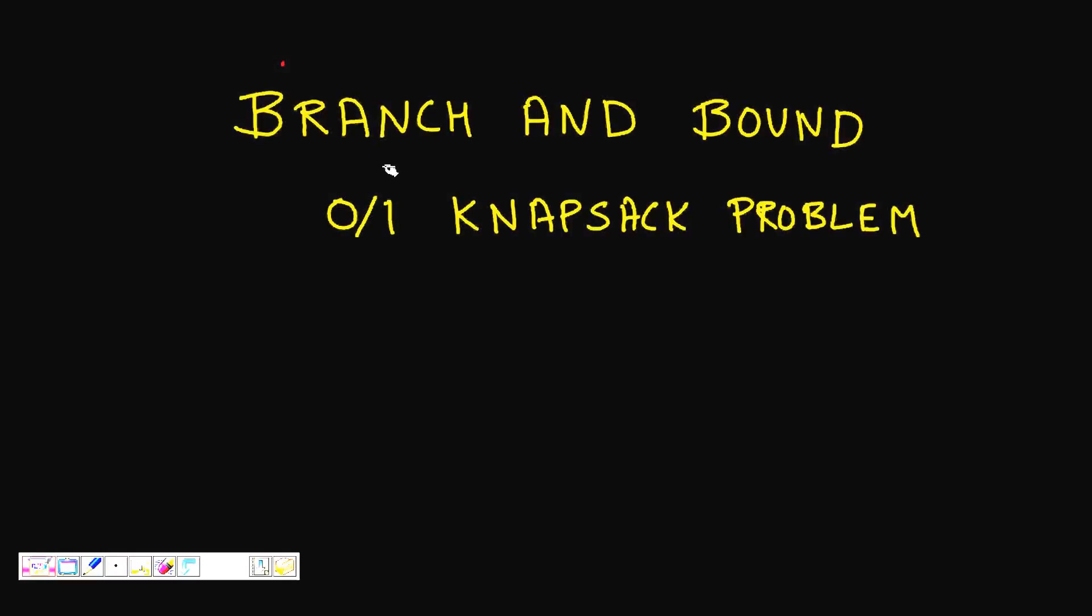In this lecture we will learn about an optimization technique known as branch and bound. Branch and bound is a very powerful tool that helps us solve optimization problems. It is a very good tool to solve optimization problems when you have to maximize something given some constraint, or minimize something given some constraint.